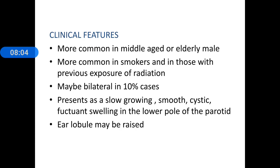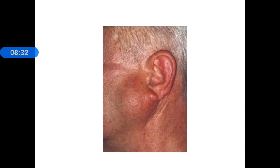Clinically, Warthin's tumour affects middle-aged or elderly males. It is more common in smokers and those with previous history of radiation exposure. It may be bilateral in 10% of cases. It usually presents as a slow growing, cystic, fluctuant swelling in the lower part of the parotid gland. The most common site is the tail of the parotid gland, and it has a smooth surface with the ear lobule possibly raised.